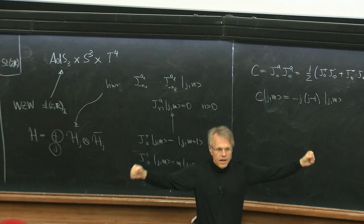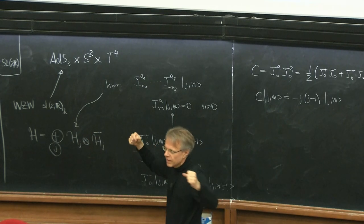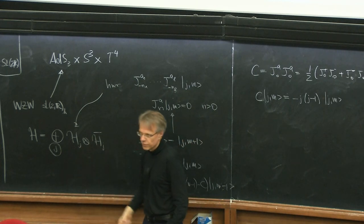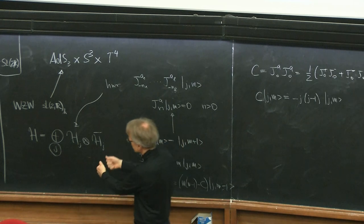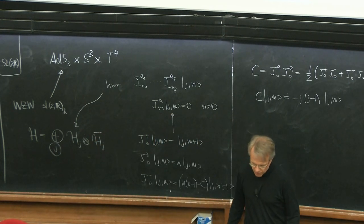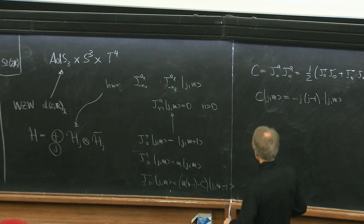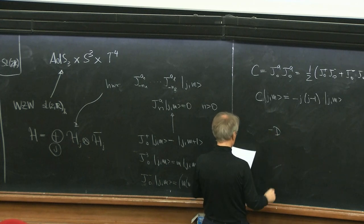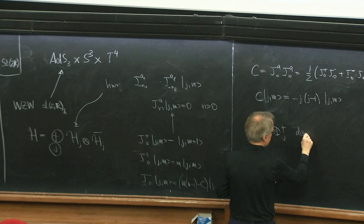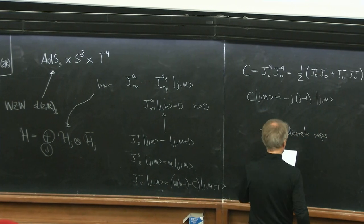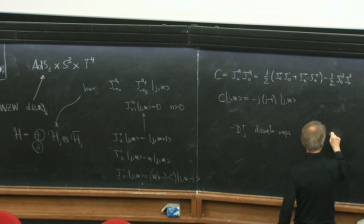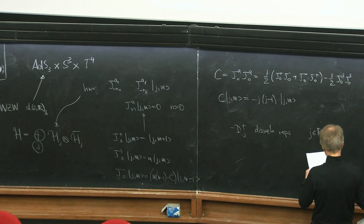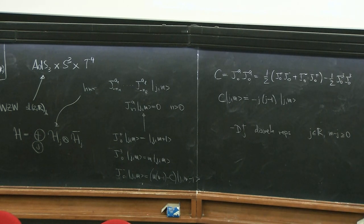The L2 space of SL2R is described in terms of tensor products of representations of the finite-dimensional group SL2R. The logic is that in string theory you should sum over the same set of representations. For SL2R there are two classes: so-called discrete representations, characterized by J being a real number, with M minus J a positive integer. There's another family, but let's focus on these. In order for the theory to satisfy the no-ghost theorem, J must be restricted to a finite range.